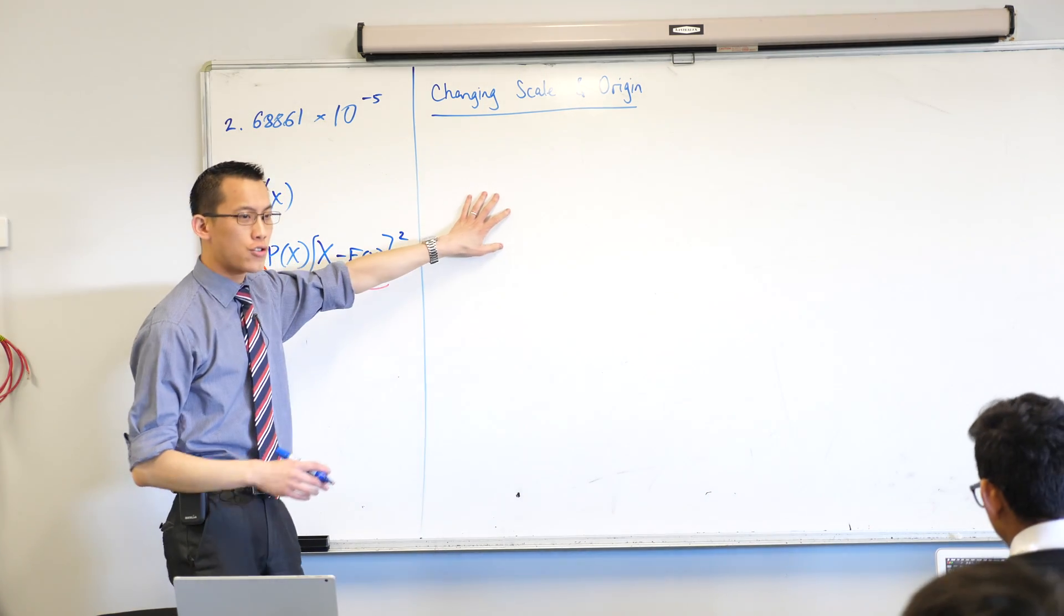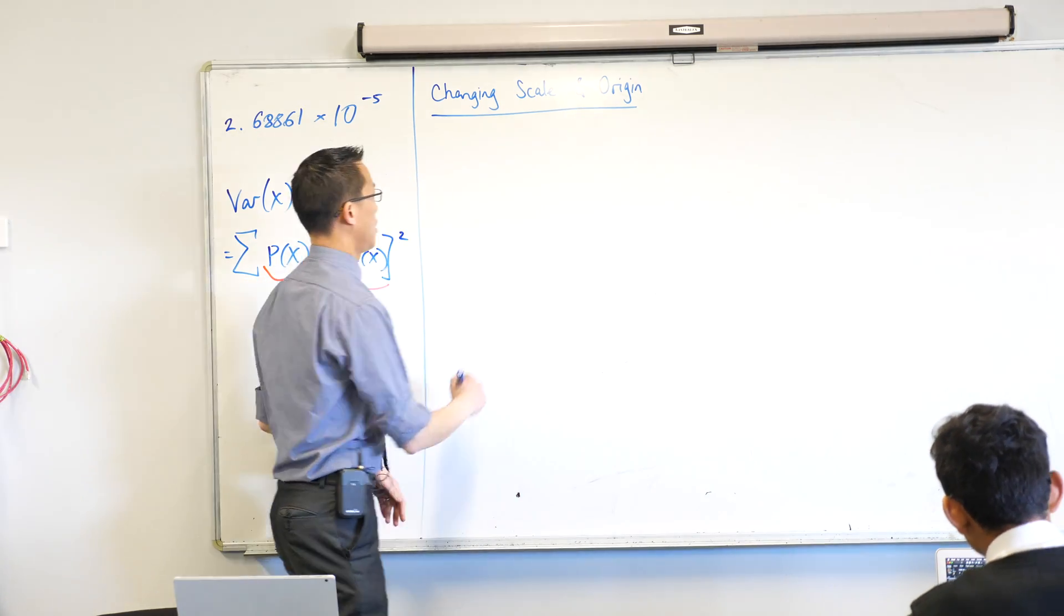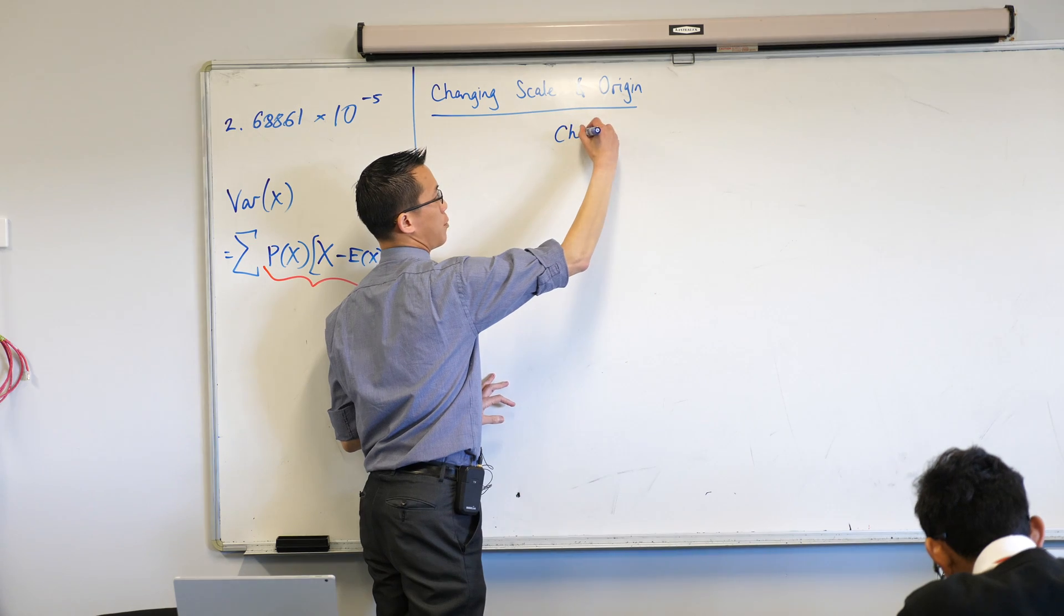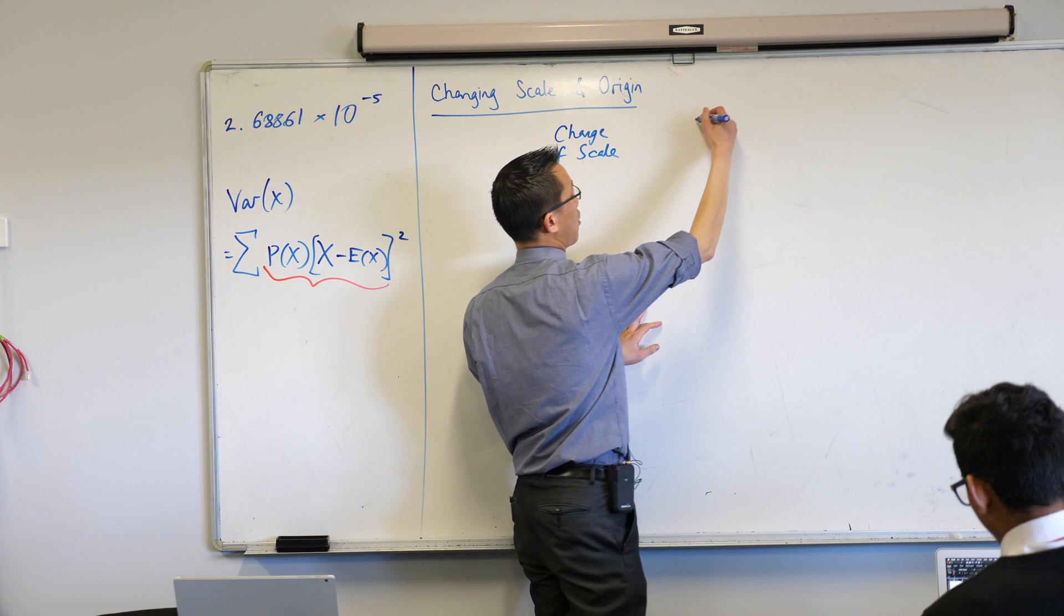Just to tie this up in a bit of a bow, I'd love you to draw a bit of a table with me. Table's going to need three columns. We'll ignore the first column for a second. The second column will be change of scale. The third column will be change of origin.